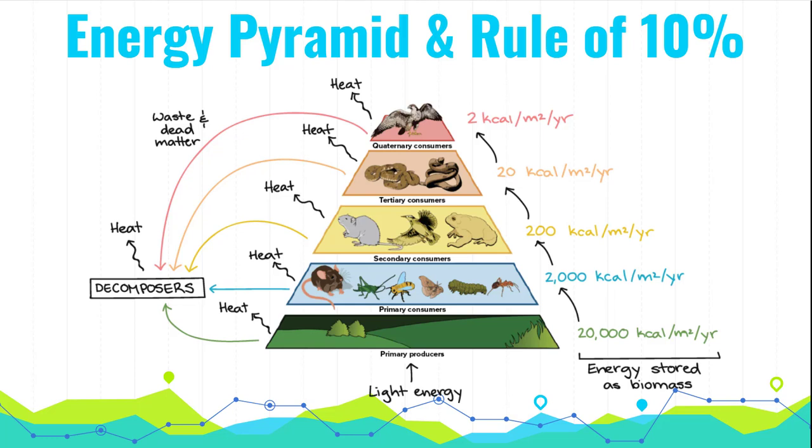The last thing we have to talk about is energy pyramids and the rule of 10%. Now, we've talked about our different levels. We have our primary producers. Then we have our primary consumers, secondary consumers, tertiary. This one has quaternary. We can keep going up. I just need you to know through tertiary. As we travel up this pyramid, here's our pyramid shape, our triangle shape, energy is transferred from level to level. And it's transferred by the eating of food. So this is the transfer of energy.